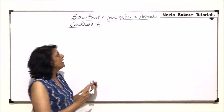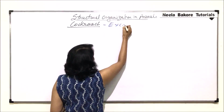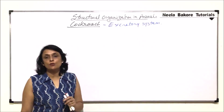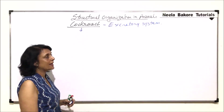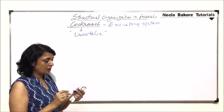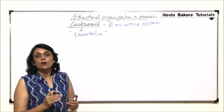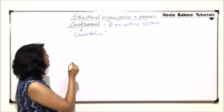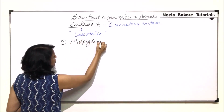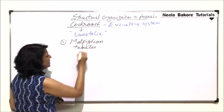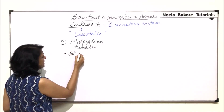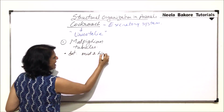In this part we'll talk about the excretory system. Excretion means elimination of nitrogenous waste. Cockroaches excrete uric acid, which means they are uricotelic. For excretion or elimination of this waste there are certain structures. The major one is the Malpighian tubule. These are the first excretory organ or structure, present between the midgut and hindgut — finger-like structures at the junction of mid and hindgut.